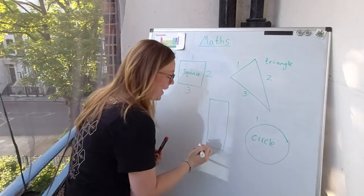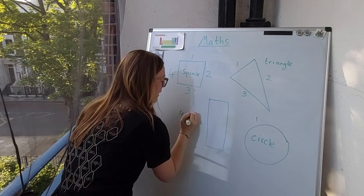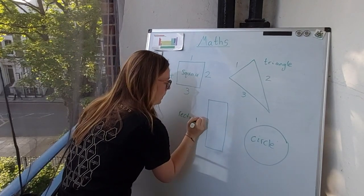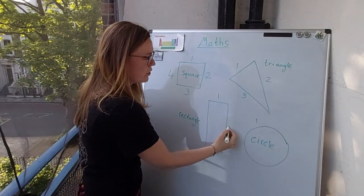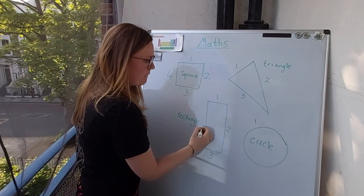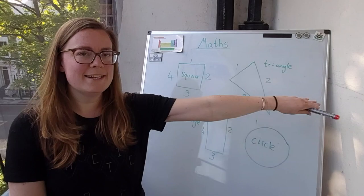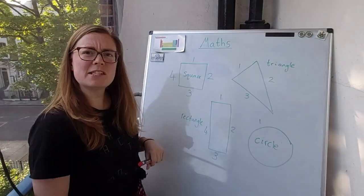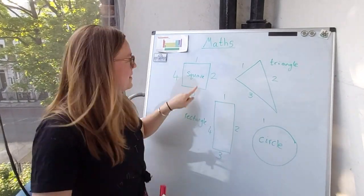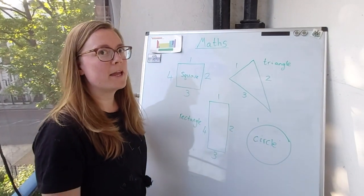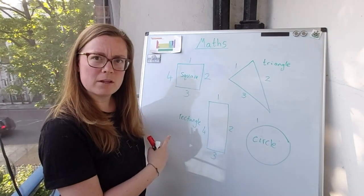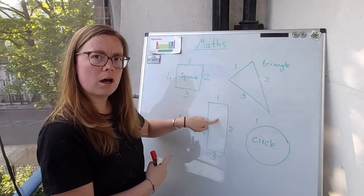It's a rectangle. Rectangle. And a rectangle does have one, two, three, four straight sides, just like the square. Does that mean that the square and the rectangle are the same shape? I think maybe. Are they the same shape? Do they look the same? No.